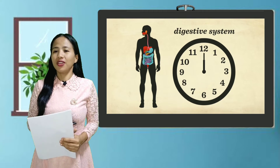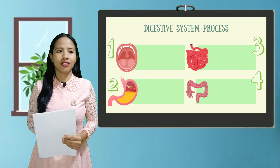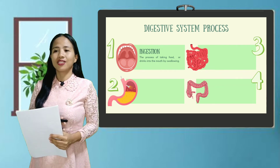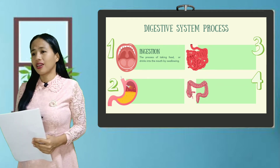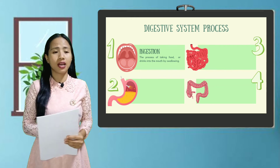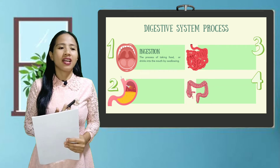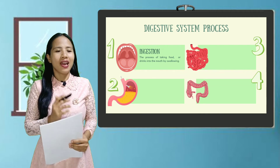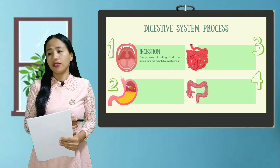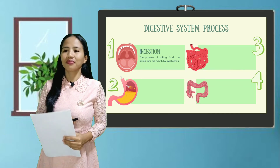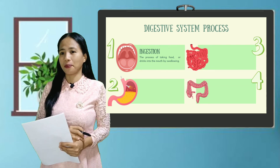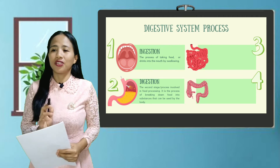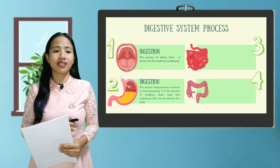Based on the video clip you just watched, how does digestion begin? Ms. Presores: it begins from the mouth. Very good. The process of taking food or drinks into the mouth by swallowing is called ingestion. What is the next organ the food passes through? Ms. Pilapil: the esophagus. Exactly. How does the esophagus work? It works as a passageway for food in order to reach the stomach. Excellent. After the esophagus comes the stomach. What's the role of the stomach? The stomach is where food mixes with juices and acids, and it is where digestion takes place. Digestion is the process of breaking down food into substances that can be used by the body.